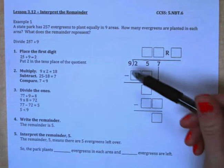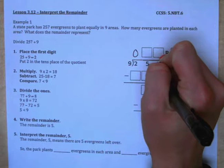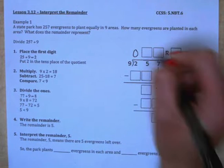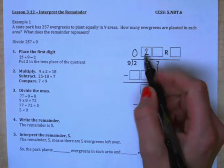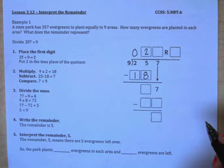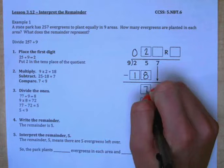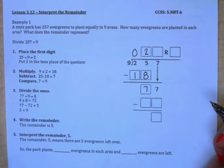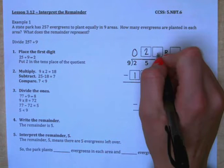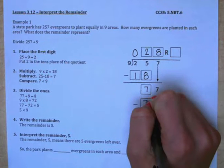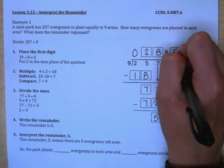So first, 9 does not go into 2, so you can write your x, your 0, or just know to move over to 25. 9 goes into 25 two times. 9 times 2 is 18, so we subtract 25 minus 18. That leaves us with 7. When we bring down our 7, we have 77. 77 divided by 9 does not come out equally, but we know that 9 times 8 equals 72. So we can subtract 77 minus 72 and get 5, so our remainder is 5.